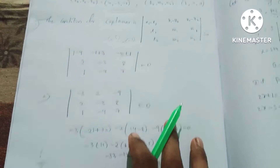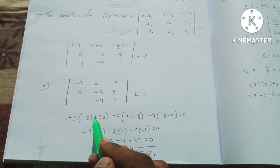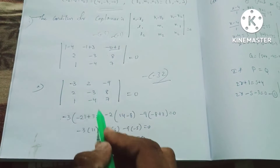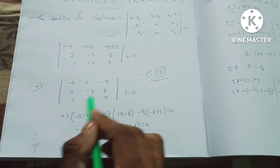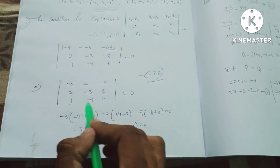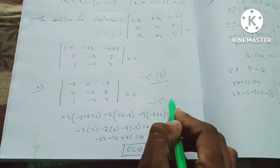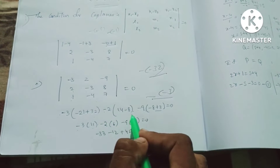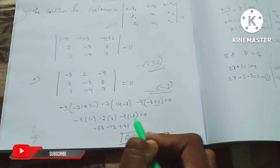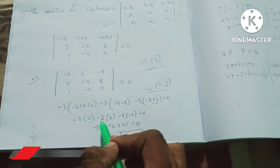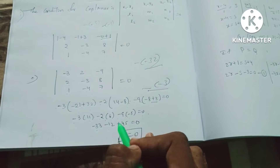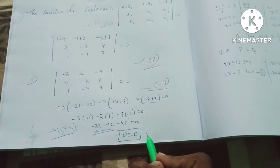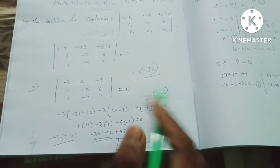Expanding the determinant: −3(−3×7 − 8×(−4)) − 2(2×7 − 8×1) + (−9)(2×(−4) − (−3)×1). This gives −3(−21+32) − 2(14−8) + (−9)(−8+3) = −3(11) − 2(6) + (−9)(−5) = −33 − 12 + 45 = 0. Therefore, the given lines are coplanar.